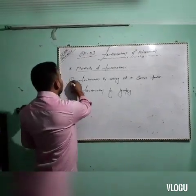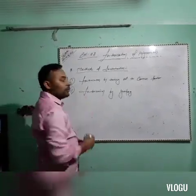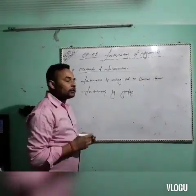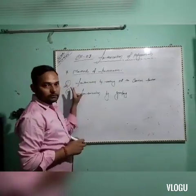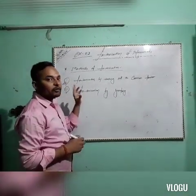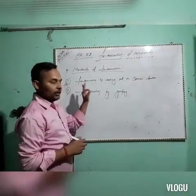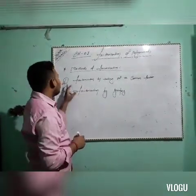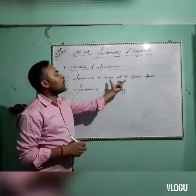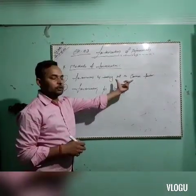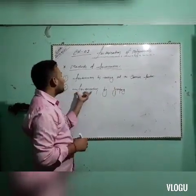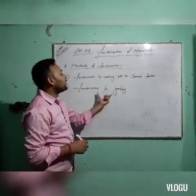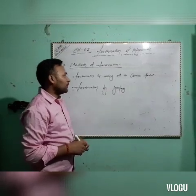Now, methods of factorization. In this exercise 3A, I have two methods. The first method is factorization by taking out the common factor, and the second is factorization by grouping.